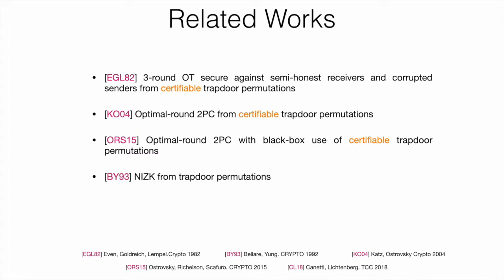Trapdoor permutations have also been used to realize other interesting primitives, like non-interactive zero-knowledge. Bellare and Yung in 1993 showed how to construct non-interactive zero-knowledge relying on trapdoor permutations without requiring this form of certifiability, and this work was later improved and extended by Kanait et al. in TCC 2018.